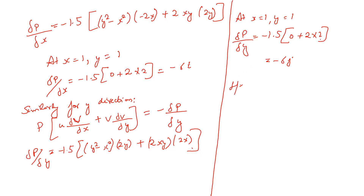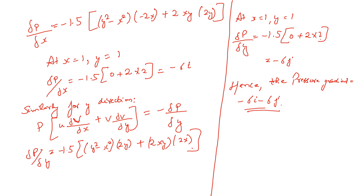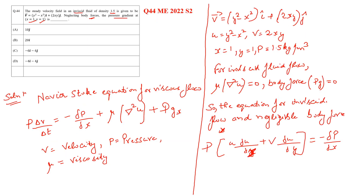Hence the pressure gradient would be -6i - 6j. So the correct answer would be option C.